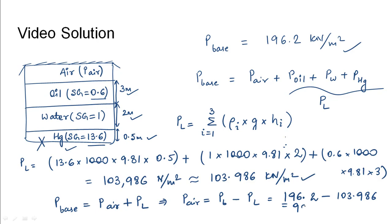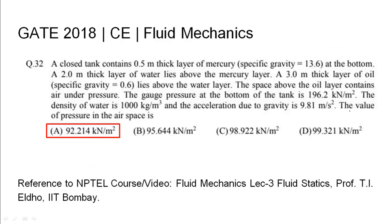be 92.214 kN/m², which is the air pressure. So the value of pressure in the air space was found out as 92.214 kN/m², which is option A. The relevant NPTEL reference has been cited.